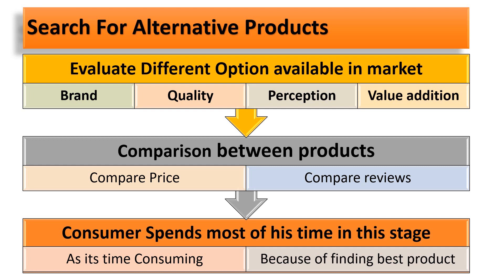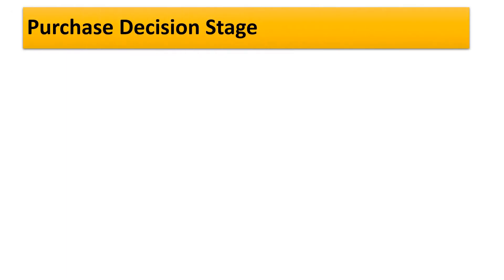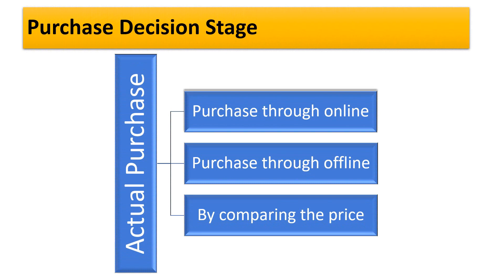After comparing all the alternative products, the next stage is the purchase decision. In this phase, the customer makes the actual purchase after searching for information and evaluating the alternatives. Once the consumer has gathered all the facts, including feedback from customers who have already used the product, they make a final purchase. The purchase can be made from a physical store or through online channels, comparing prices of both options.